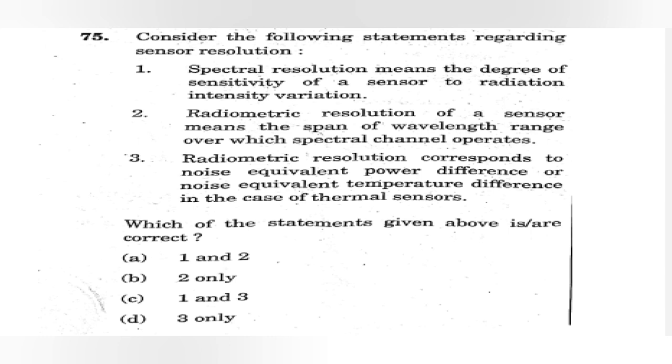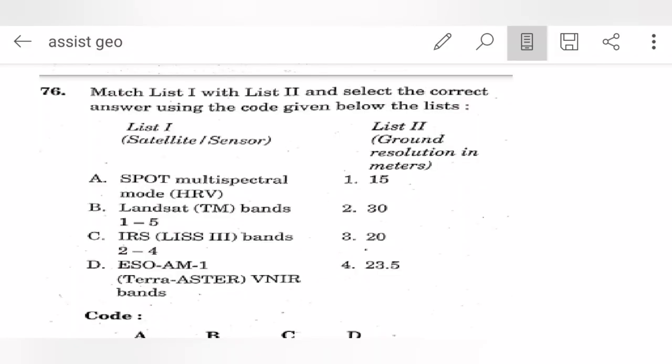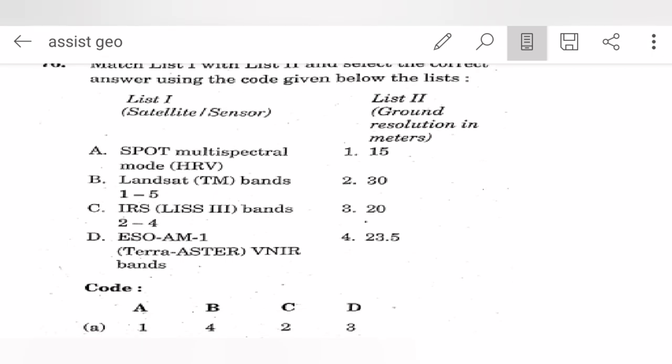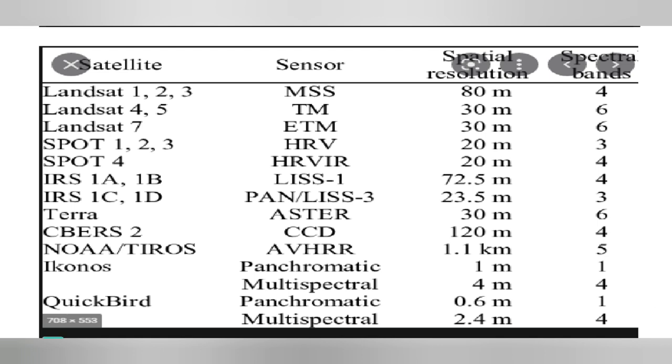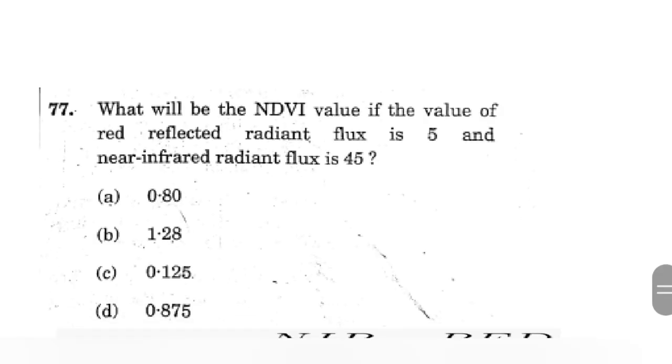Which one of the following mass extinction event marked the end of conodonts? It is end-Triassic mass extinction. The following statement regarding sensor resolution - I have chosen third as correct option. Question 76 is match the following with their resolution. These are satellites: SPOT, Landsat TM (thematic mapper), IRS, and ESO. We have to match with resolution. Here it is written IRS has resolution of 23.5 meters, Landsat 4 to 5 TM has 30 meter resolution, SPOT 4 has resolution of 20 meters. You can match them. What will be the NDVI value if the value of red reflected radiant flux is 5 and near-infrared radiant flux is 45? Those who have read NDVI, which is Normalized Difference Vegetation Index - and there is NDVI and NDSI which is snow index - formula for NDVI is NIR minus red upon NIR (near-infrared) plus red reflected radiance. So answer will be 0.8. This is the formula.